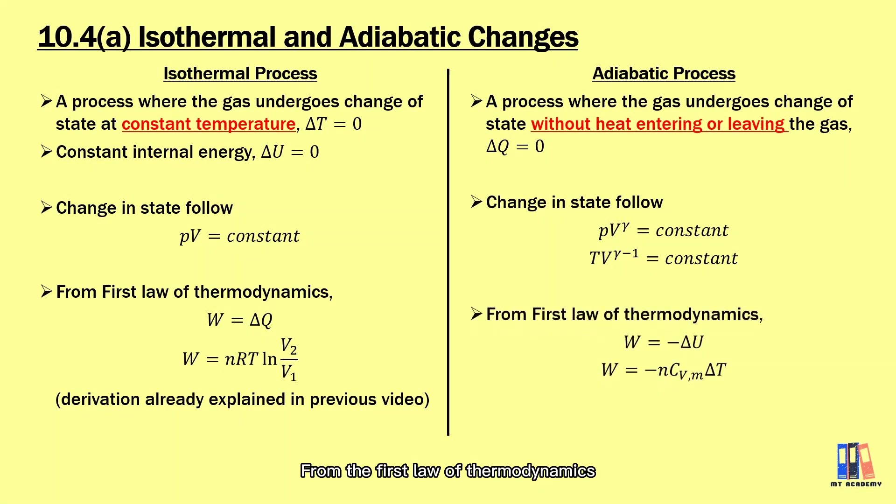Another formula would be the TV to the power of gamma minus one as the constant. From the first law of thermodynamics, we have delta Q is zero, so we have work done is the negative of delta U. This means that the expansion of gas is supplied by the internal energy of gas since there is no heat supply to the gas. The change in internal energy could be expressed as nCv delta T as discussed before.